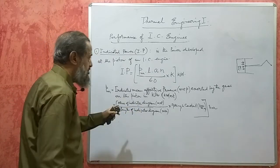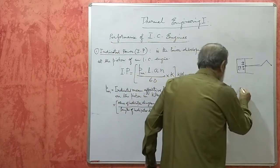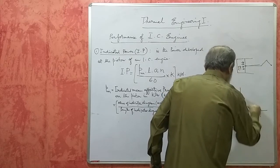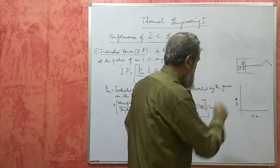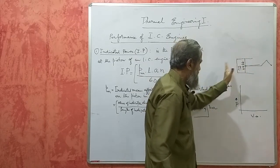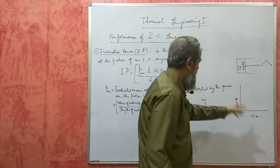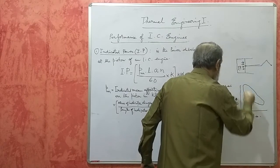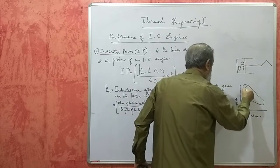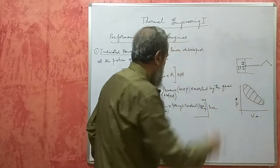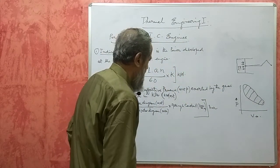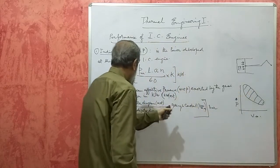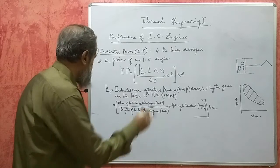The indicator diagram is nothing but the actual PV diagram drawn for the engine. To draw this PV diagram, we use a mechanism called the indicator mechanism, attached to the piston. As the piston moves forward and backward, a pen draws this graph on a graph sheet to some scale. The area of this diagram is measured using an instrument called a planimeter. Multiplying by the spring constant gives the mean effective pressure — that is PM.